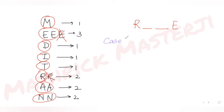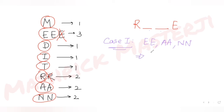Case 1: I can fill both middle blanks with the same two letters. That means I can pick two E's, or two A's, or two N's. So I have three groups to choose from, and selecting any one of them gives me one word. That's 3C1 = 3 words in this case.